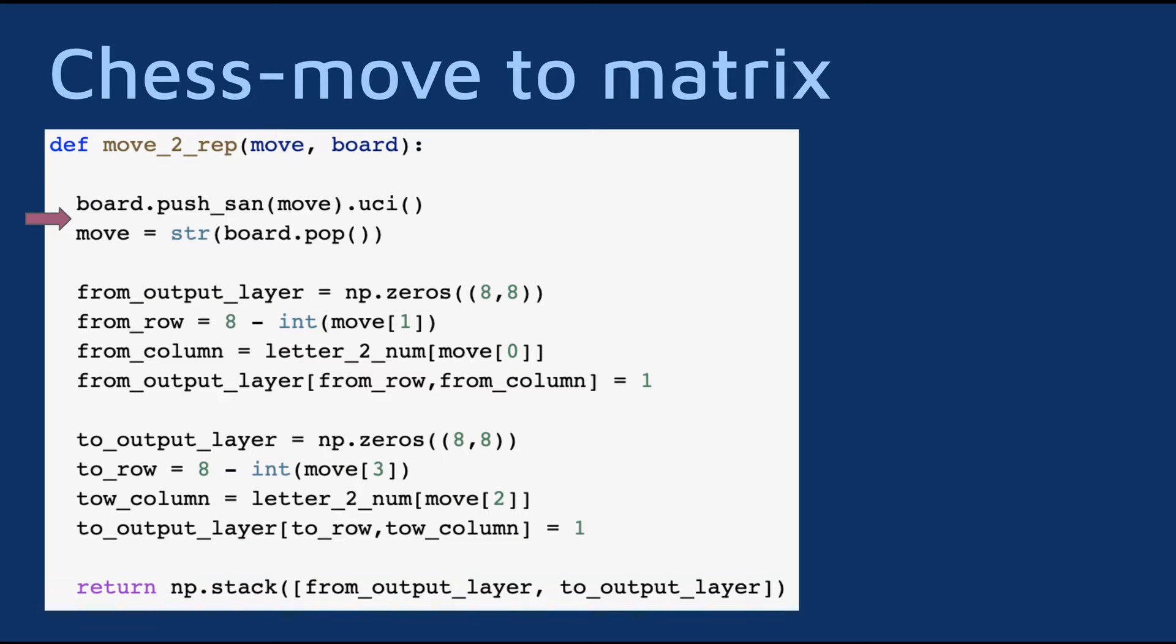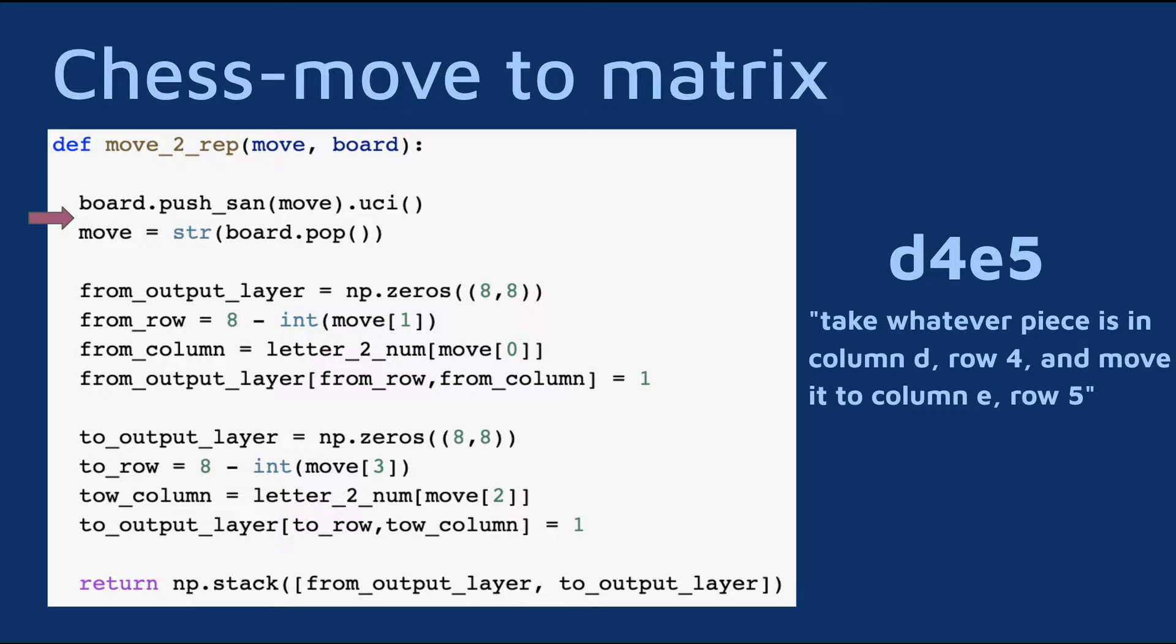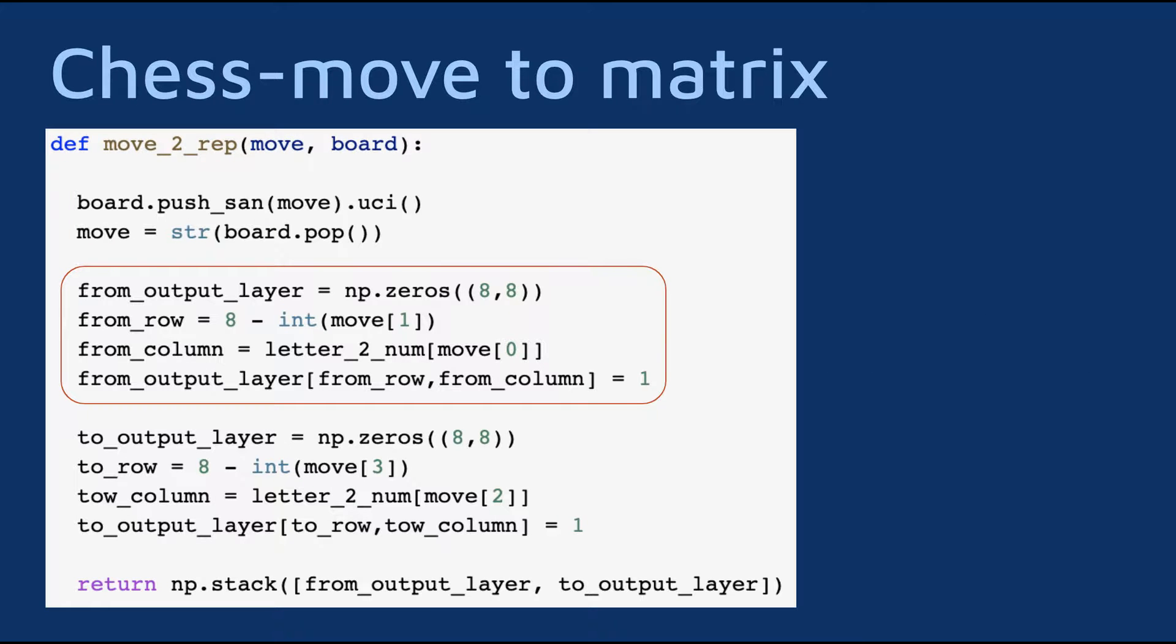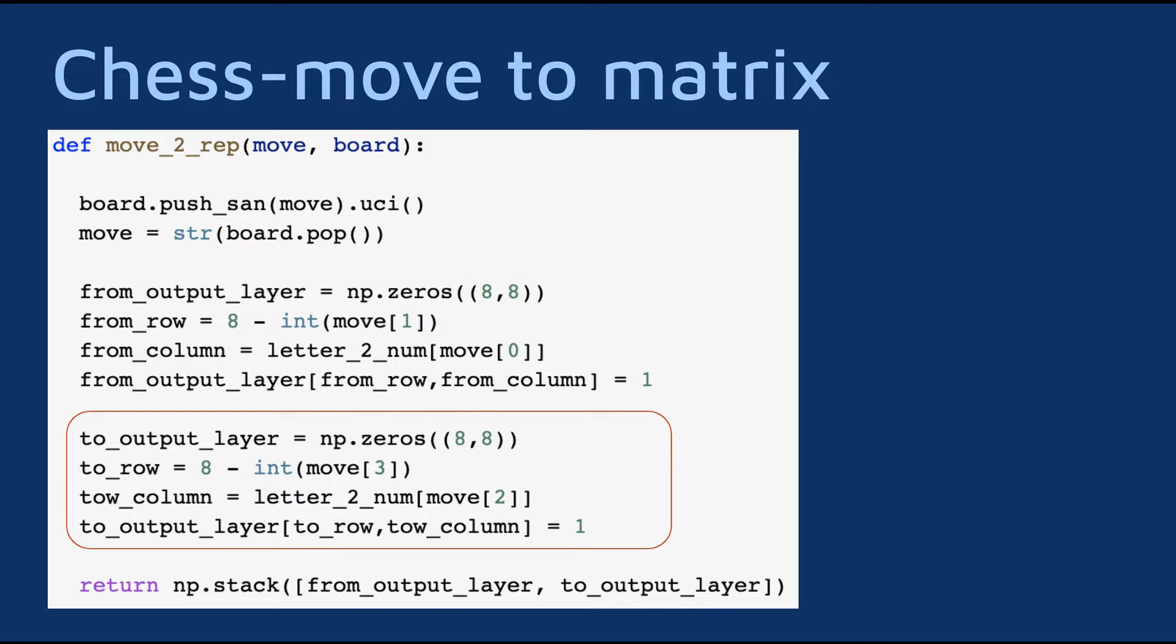First, we need to convert the move the function receives as input into a more convenient format. The moves in the dataset are in a format called standard algebraic notation, which is a bit complicated, but the important thing is that we need to convert it into the UCI format. UCI is a very simple format that uses four numbers, the column and row where the piece starts, and the column and row where it ends. For example, the move D4E5 means take whatever piece is in column D, row 4, and move it to column E, row 5. Once we have the move in UCI format, we can use the chess-to-matrix dictionary we created earlier to convert a 0 into a 1 in the position the piece moves from. We also flip a 0 to 1 on the other feature map, where the piece moves to.